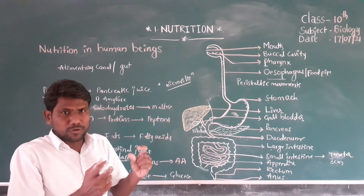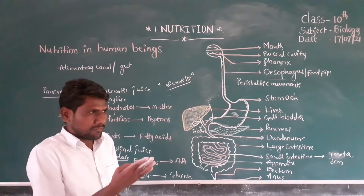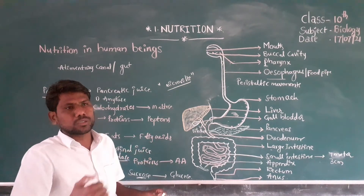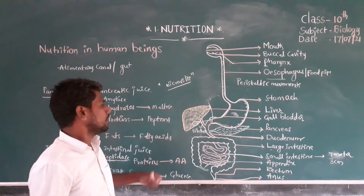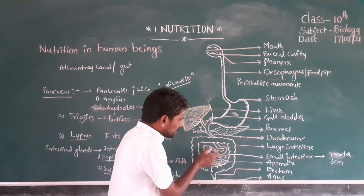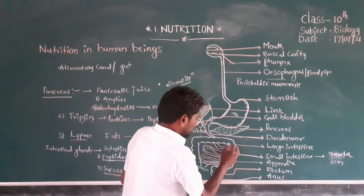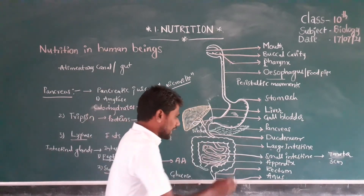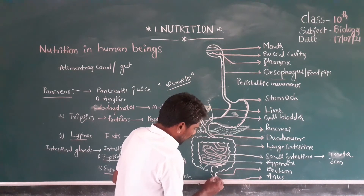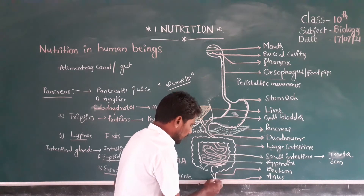The useful substances are absorbed and sent into the blood. When the useful products mix with blood, the blood transfers them to each and every cell and part of our body. Any waste materials enter into the large intestine. This waste material is called fecal matter or feces. The feces enter the rectum and are sent out through the anal opening.